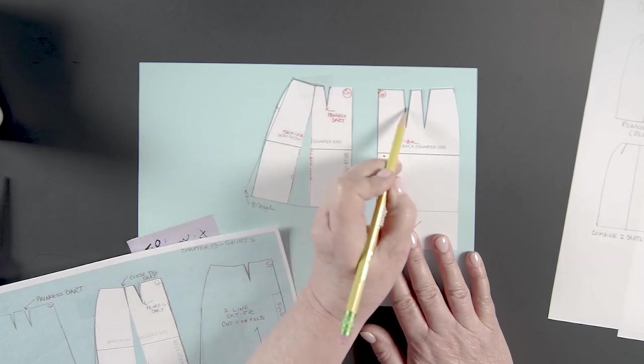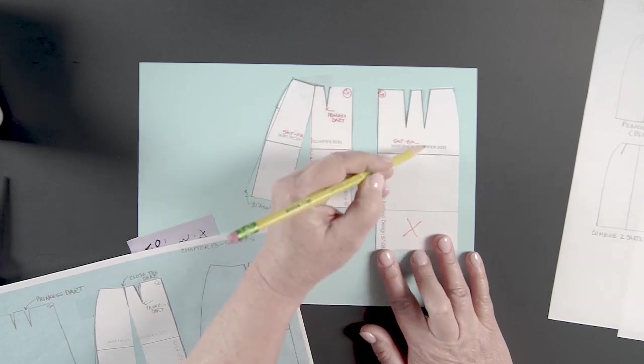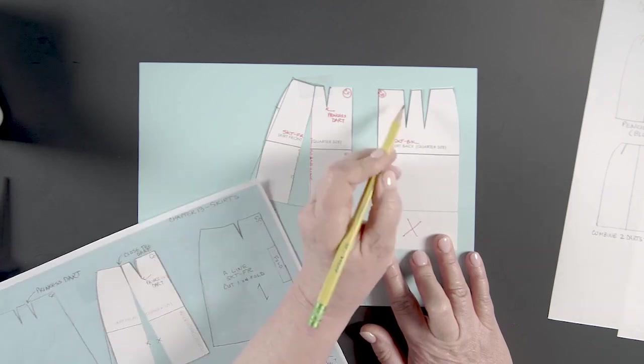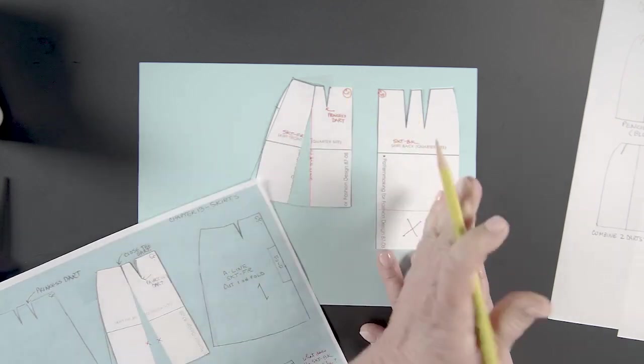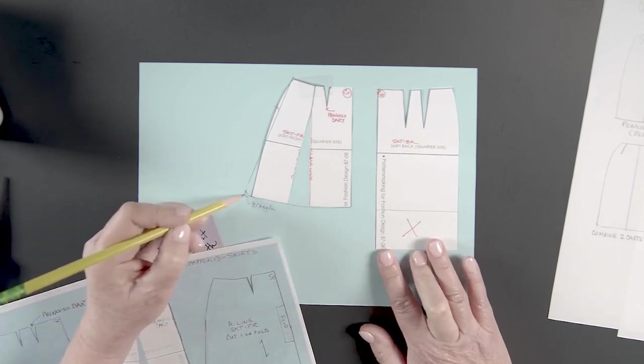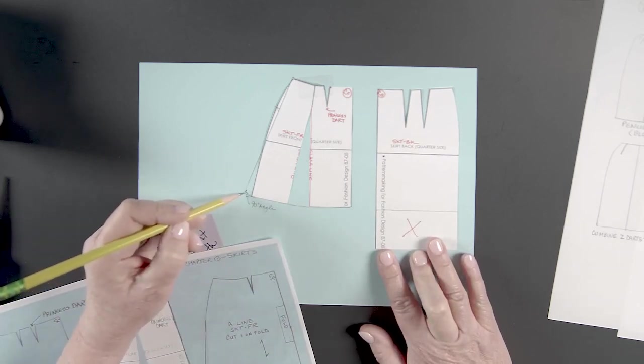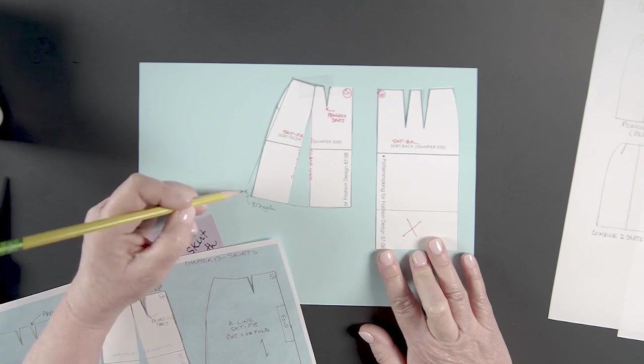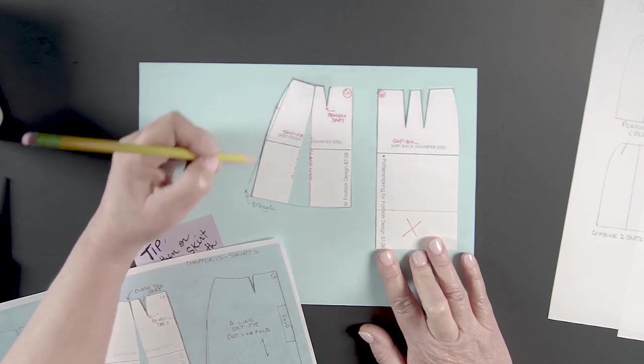This one is the same as that. We want to keep this one as a dart. Then we're going to draw this line down here and we're going to close this dart and swing that out. The same thing applies. We're going to have to add a little bit more sweep here so that we can have a 90 degree angle here and cut off the hip curve.